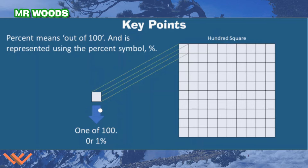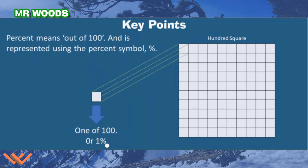Here I have one square out of this hundred square. And I know it's a hundred square because there are 10 rows and 10 columns. Because 10 times 10 is 100. So if I take 1 out, that's 1 of 100, which is equal to 1%.